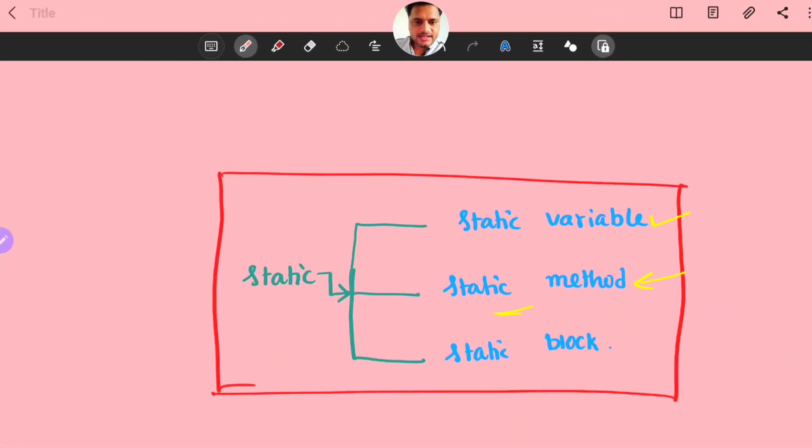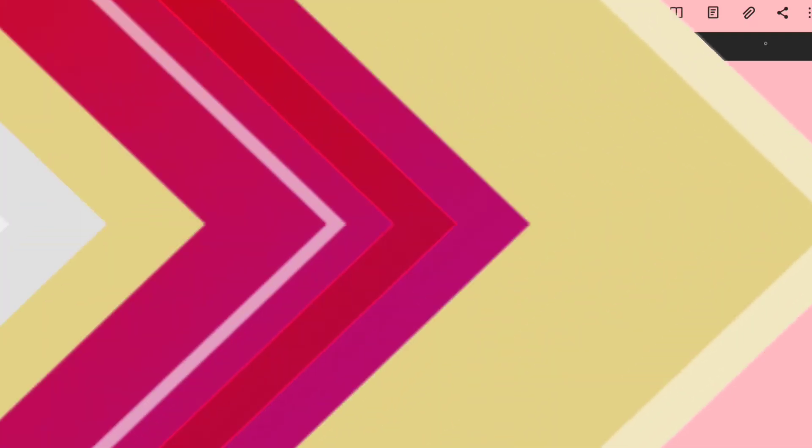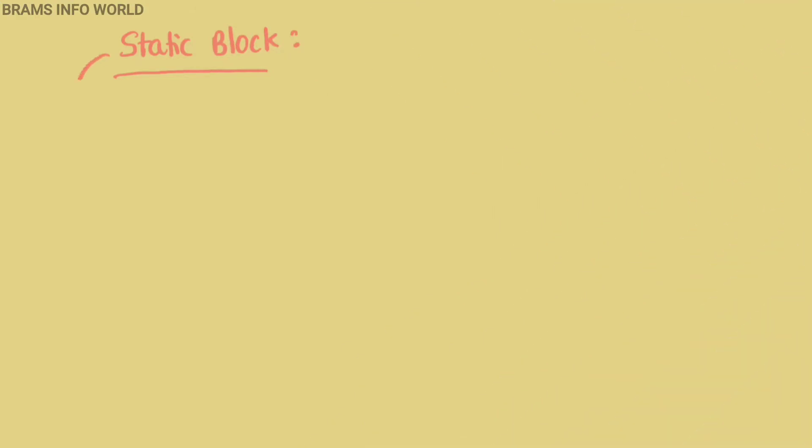We know the concept of static variable and already studied static method. So let's go through the information about static block. A block is a group of program code defined under parentheses. What is a static block? Let's see the concept of static block.